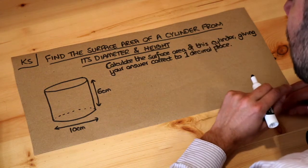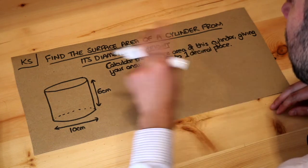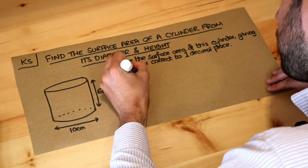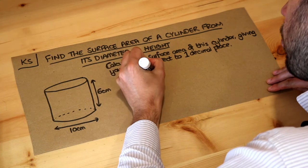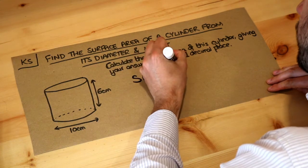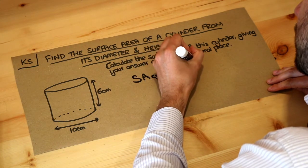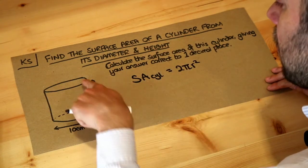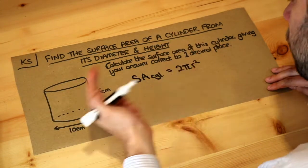Now in the previous video we looked at how to find the surface area of a cylinder if we had the radius and height, and this was the formula. The surface area of the cylinder was 2πr² because that gives you the areas of the top and bottom circles, plus 2πrh.